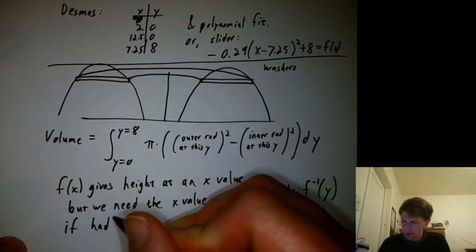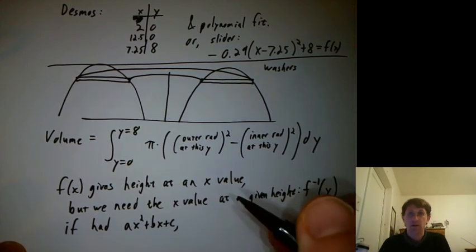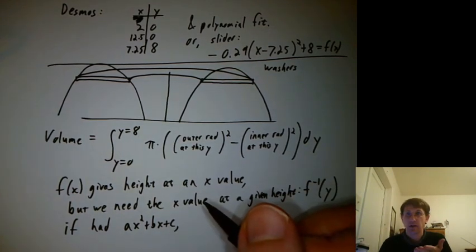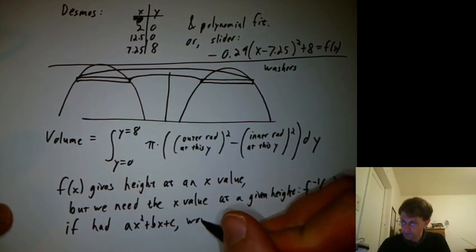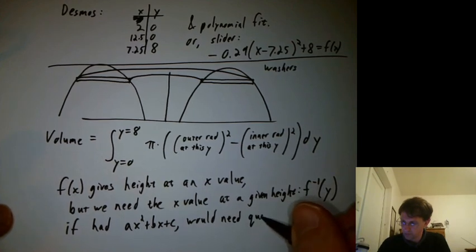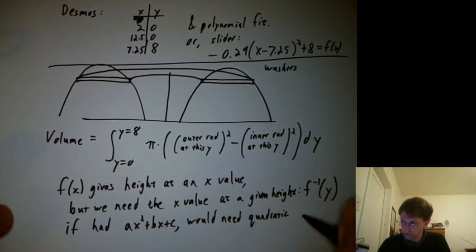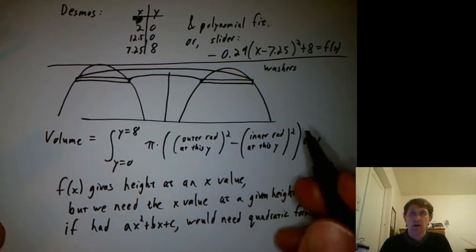So if we had ax squared plus bx plus c, we'd need the quadratic formula to determine those intersections.